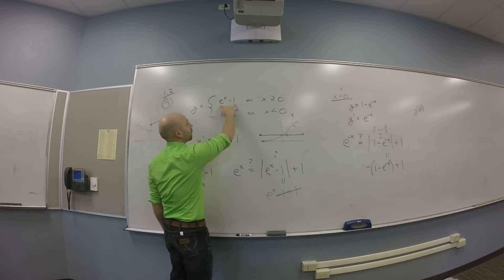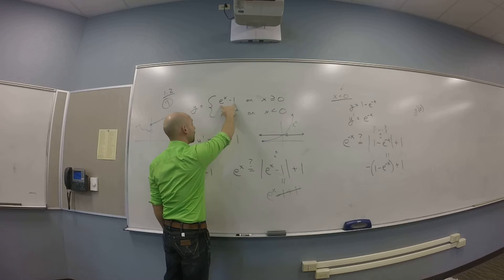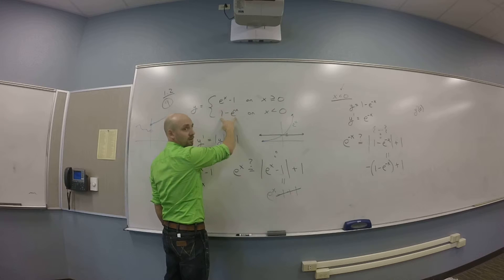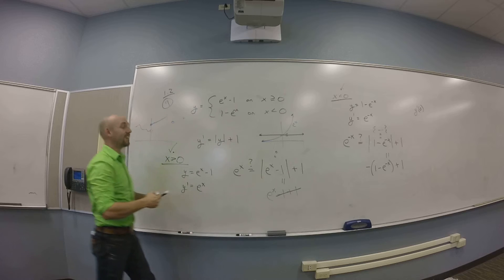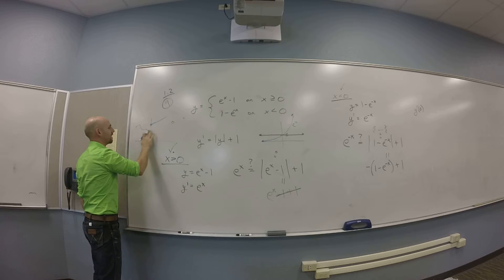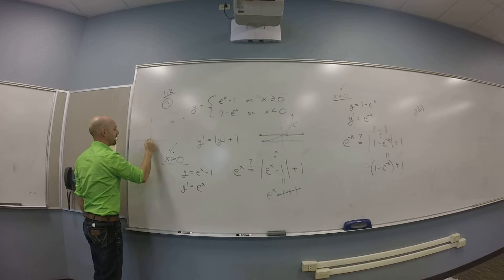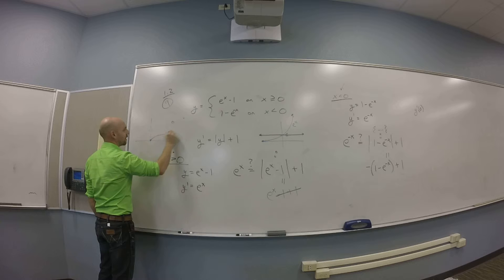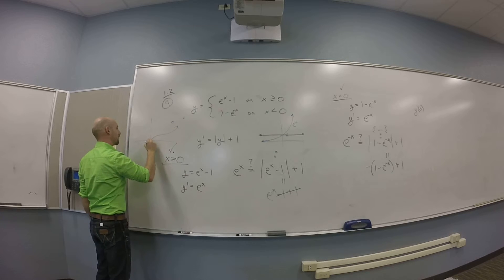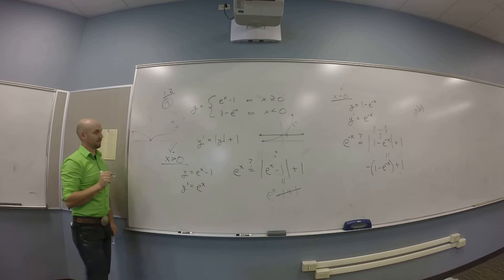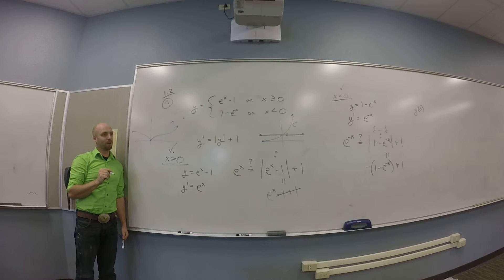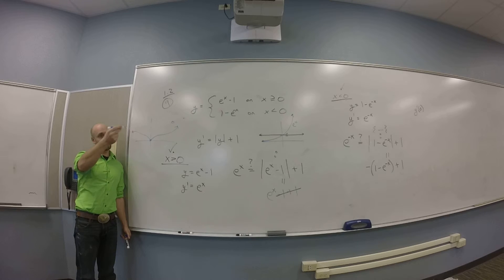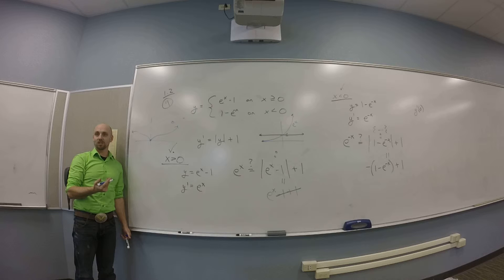If I plug zero into the first piece, I get zero. If I plug zero into the second piece, I also get zero. So both pieces meet at zero — good. But I might still have something like a cusp there, in which case I still can't get a tangent line and there's no derivative at zero.